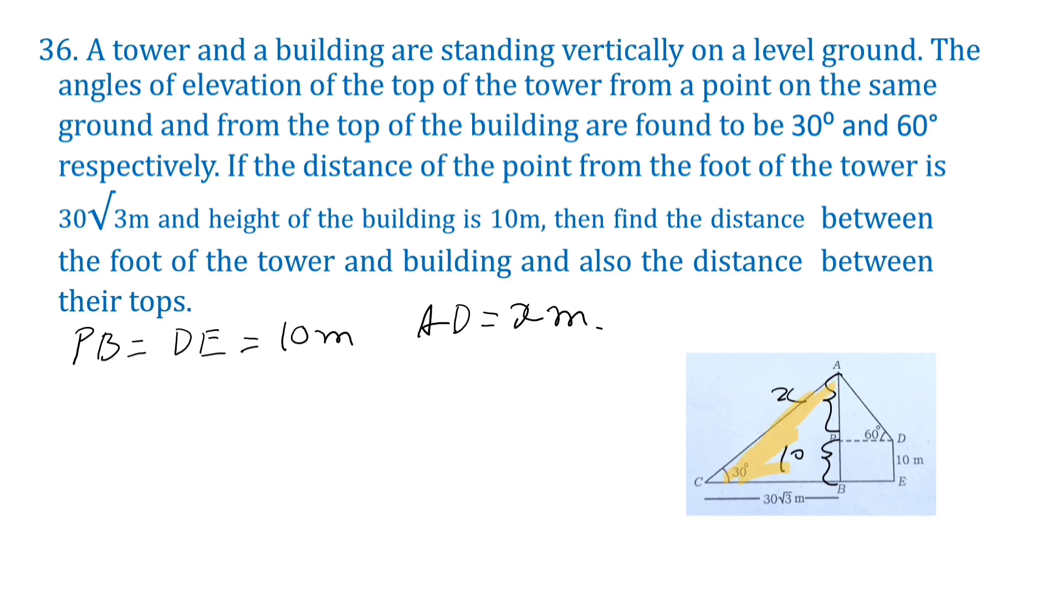In right angle triangle ABC, tan C, tan C is equal to AB by CB, opposite by adjacent. Tan C, tan C is tan 30. That is equal to AB is equal to 10 plus X, 10 plus X. Here 10, here X.